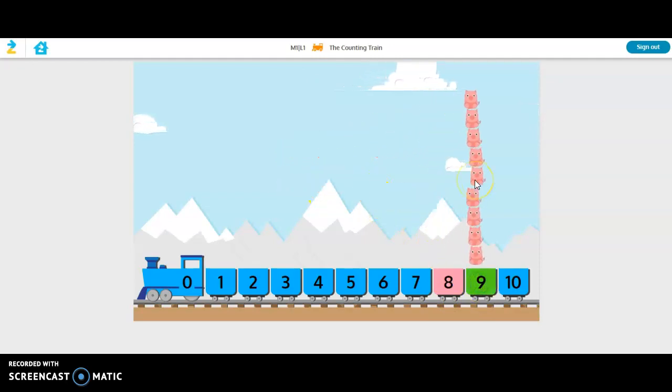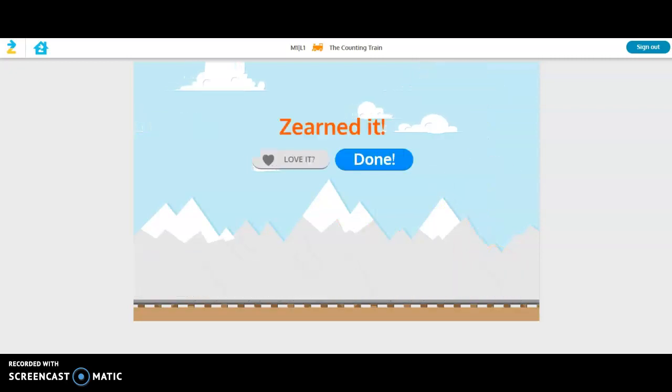Now if I get it right it will turn green and then I can see that it moves me forward. When you finish the first activity in the Number Gym you'll see that you earned it, and when you're finished you can hit done. If you loved this activity you can hit "love it" and then click done to move forward.